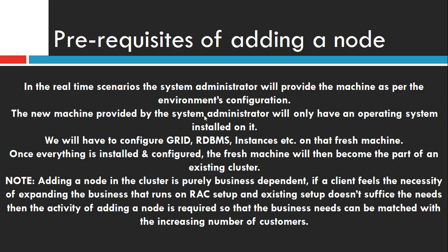Once everything is configured — right from the IPs, hostnames, grid, RDBMS, instances, etc. — the machine will become part of the cluster. Until then, the machine is still considered an independent machine and will not have access to the shared storage and the other machines that are currently part of the cluster. The new machine we add should also become part of the cluster and be able to communicate with the other machines.